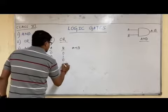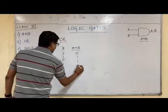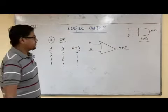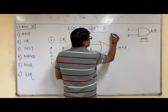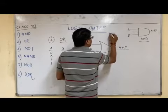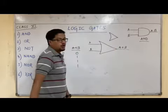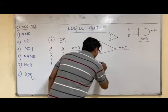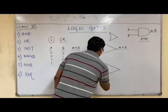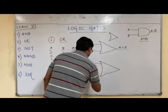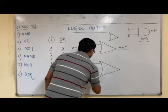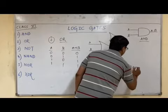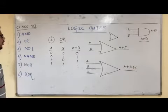The OR truth table for two variables: 0+0=0, 0+1=1, 1+0=1, 1+1=1. The symbol of the OR logic gate — just draw a triangle and curve the inward part; this is your OR logic gate. For three variables A, B, C, the output is A plus B plus C.